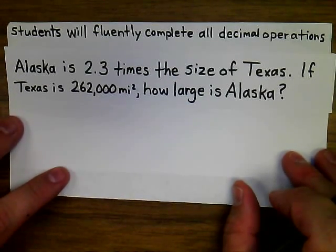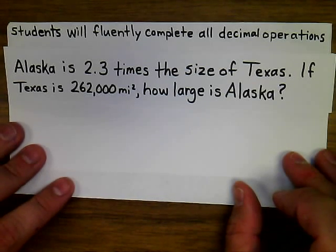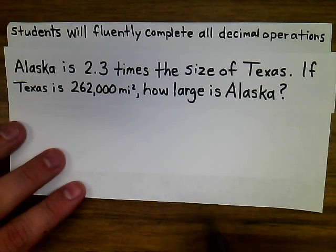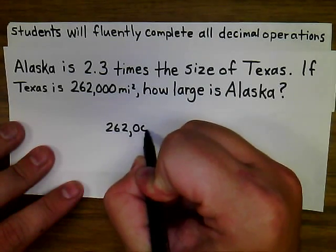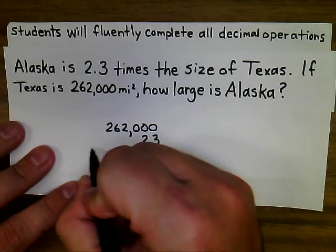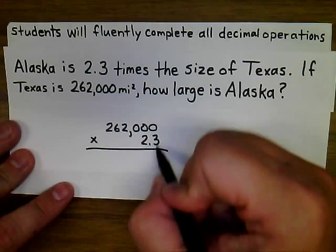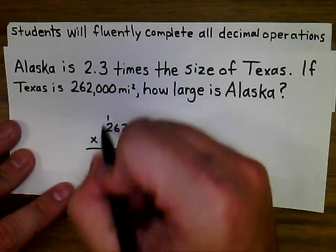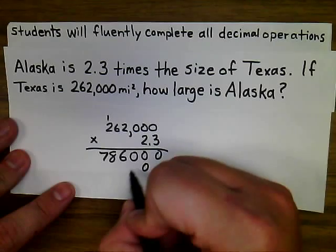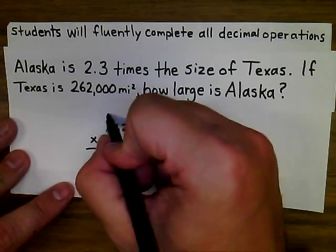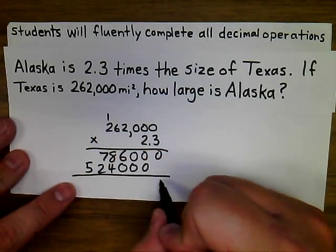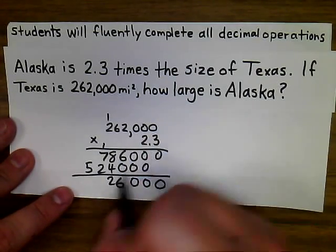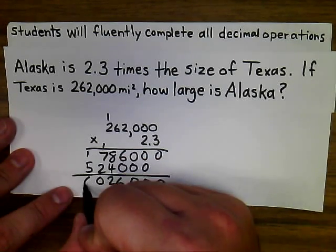Alaska is 2.3 times the size of Texas. If Texas is 262,000 square miles, how large is Alaska? Just like the previous problem, we're going to multiply to solve this: 262,000 times 2.3, following standard multiplication procedures.